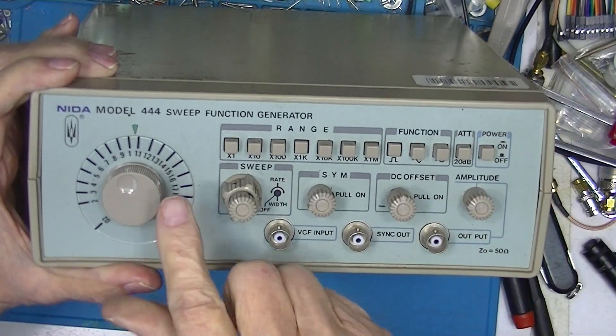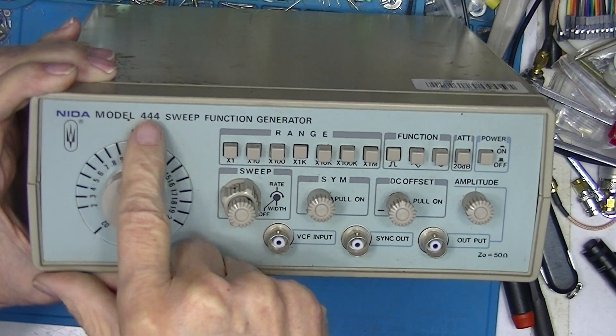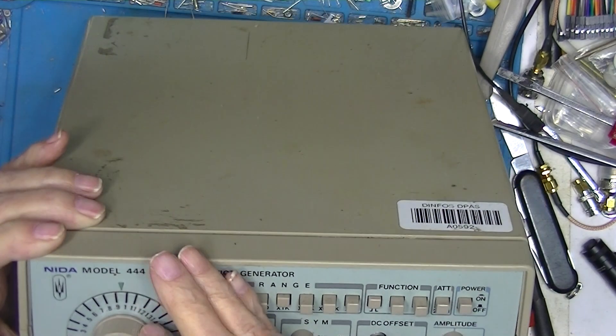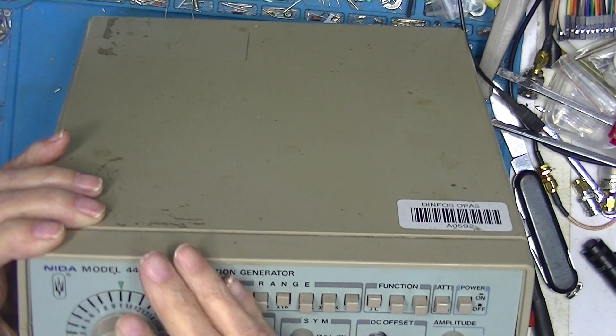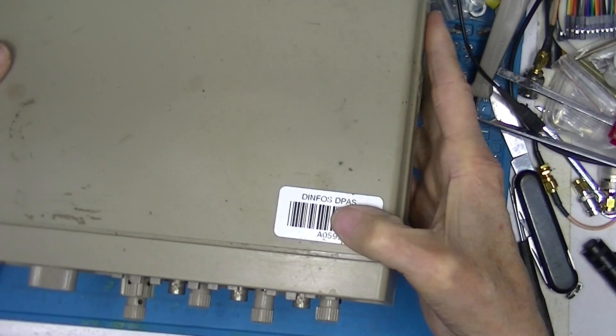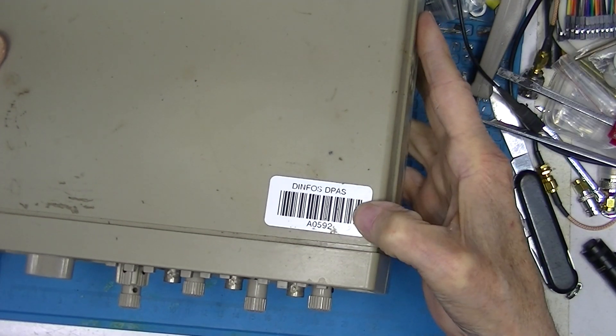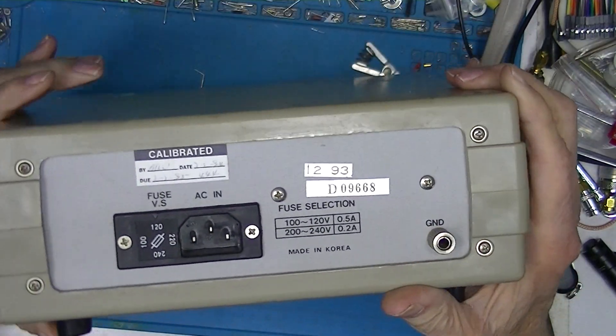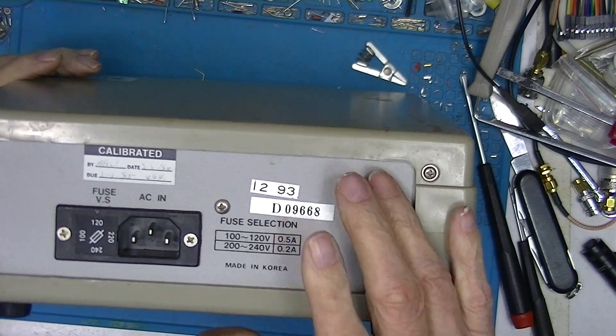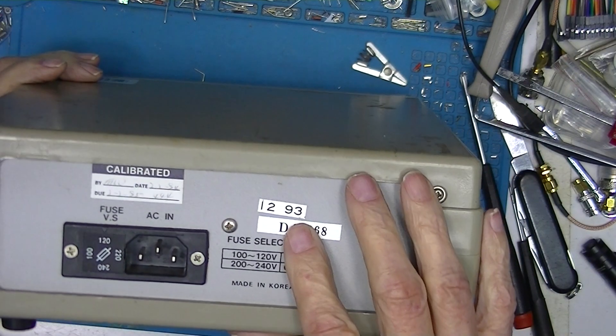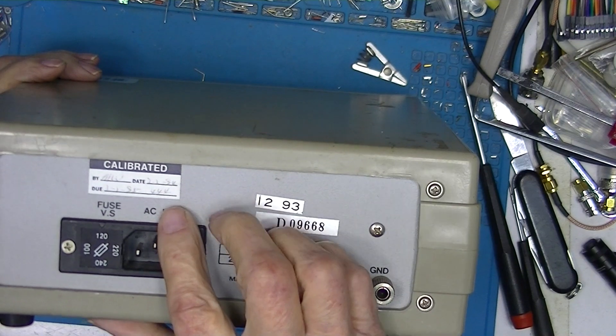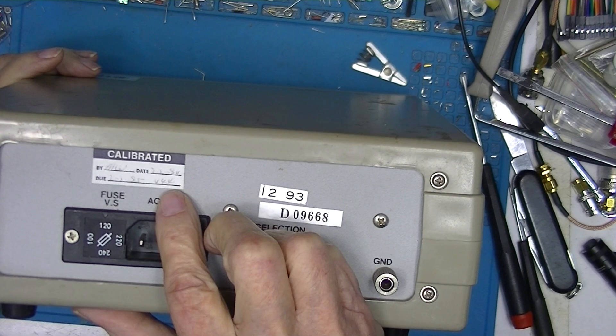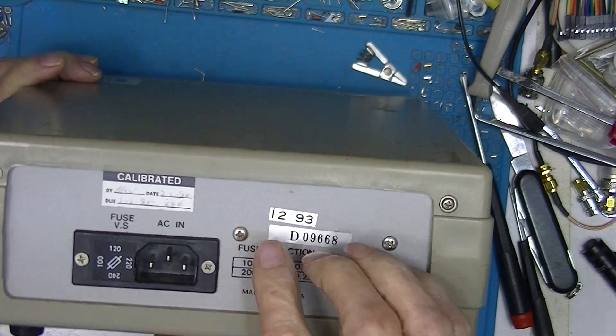Here's the second one. You see it's an NIDA 444. You can't tell them apart. They look exactly the same. This was owned by somebody official. This is one year newer than the one we just did, and it was last calibrated in 94, so it was calibrated probably when they got it.